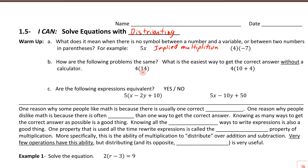Let's take a look at a couple of problems: 4 times 14, and 4 times (10 + 4). How are these problems the same, and what's the easiest way to get the correct answer without a calculator? Inside the first set of parentheses is 14, and if we add 10 plus 4, we also get 14 — so it's the same problem. I didn't memorize my 14 times tables very well, so what we can do is think it through using the distributive property.